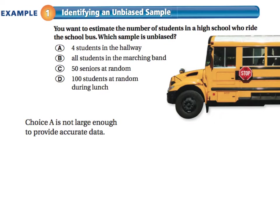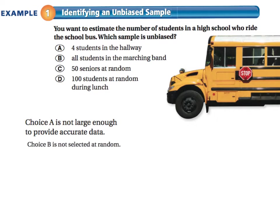What about choice B — all students in the marching band? Choice B would actually be biased because you chose all people in the marching band. You have to select something at random, so choice B is not selected at random.